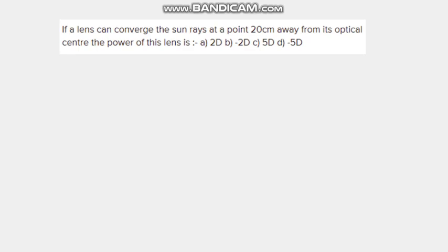Hello students, let's take up the next question. Today's question is: if a lens can converge the sun rays at a point 20 centimeters away from its optical center, then the power of this lens is 2 diopter, minus 2 diopter, 5 diopter, or minus 5 diopter. We have to select the correct option.